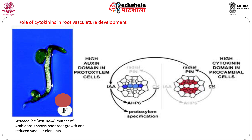Cytokinins also play an important role in the development of vasculature in plants. Cytokinin signaling regulates root development. In a cytokinin signaling mutant, root growth is highly reduced and root vascular elements are reduced. The development of root vasculature involves crosstalk between auxin and cytokinin signaling. Auxin signaling induces expression of the cytokinin signaling inhibitor AHP6, which inhibits cytokinin signaling in the protoxylem regions.